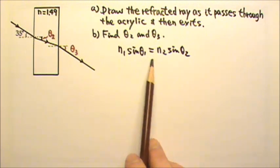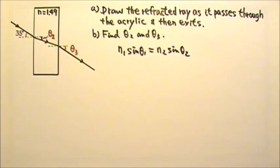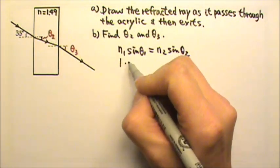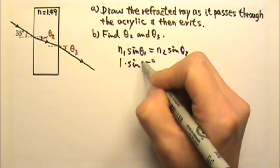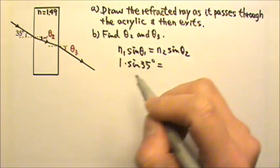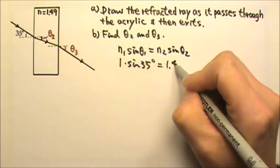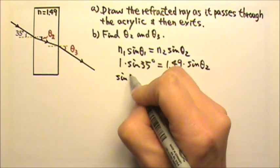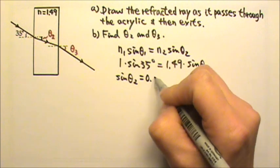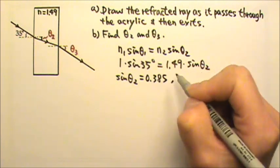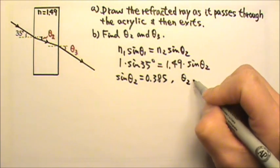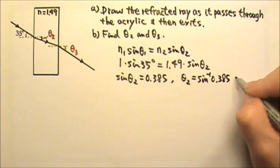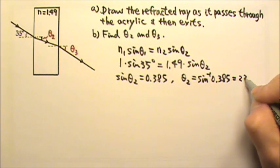We can use Snell's law to find these angles. For the first refraction, the first medium, air, has an n of 1. The angle is 35 degrees. The second medium is acrylic, n equals 1.49, and we're looking for theta 2. So we should find sine theta 2 to be 0.385. And that means theta 2 is inverse sine 0.385, which gives us 22.6 degrees.